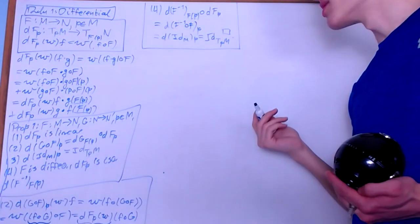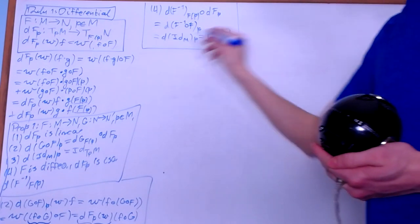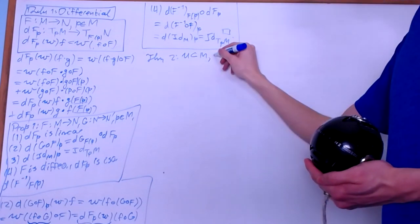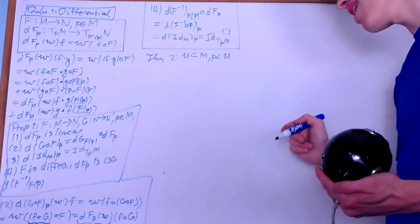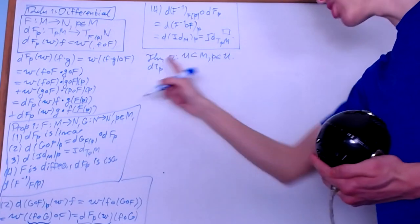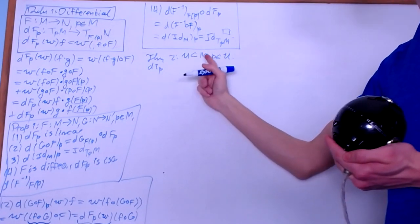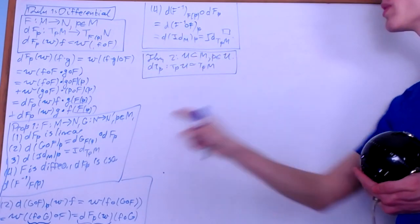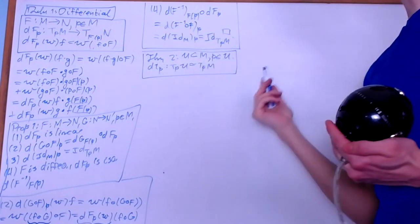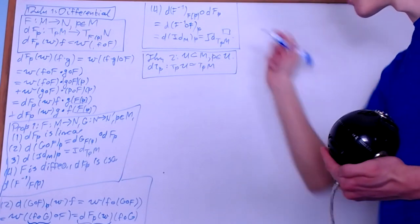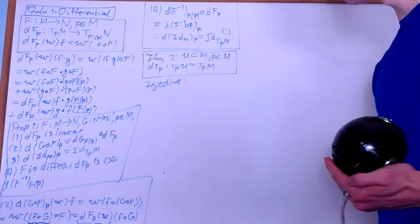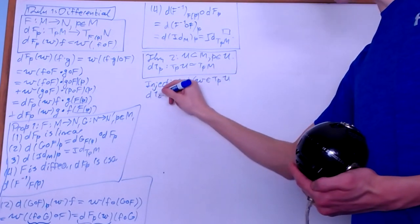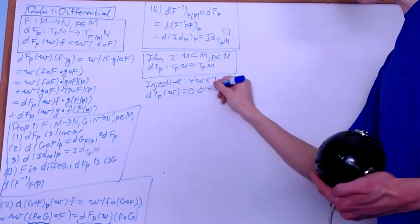That's the end of the proof of all four properties. We can now prove that for any open sub-manifold U of a smooth manifold M and any point P in U (and thus also in M), the map ι_P — where ι is the inclusion map sending every element of U to itself in M — is an isomorphism between T_P U and T_P M. By property 1 it's linear, so we just need to prove it's bijective, meaning injective and surjective.